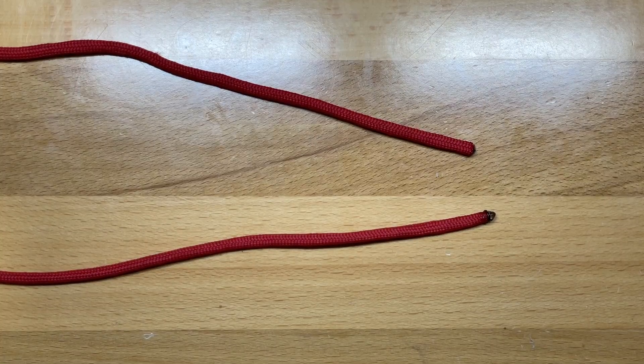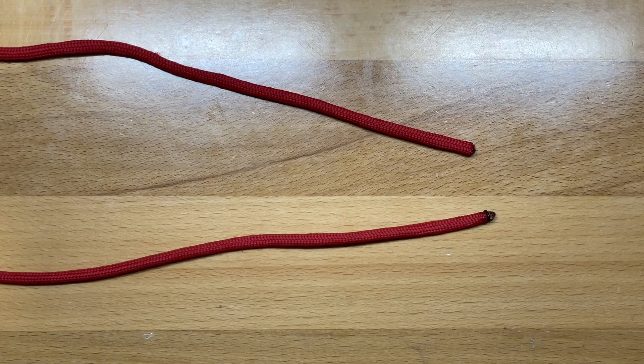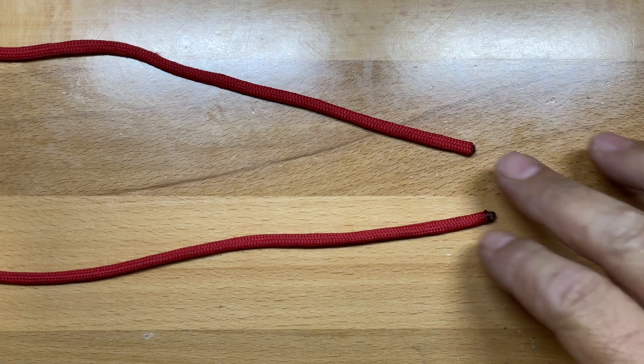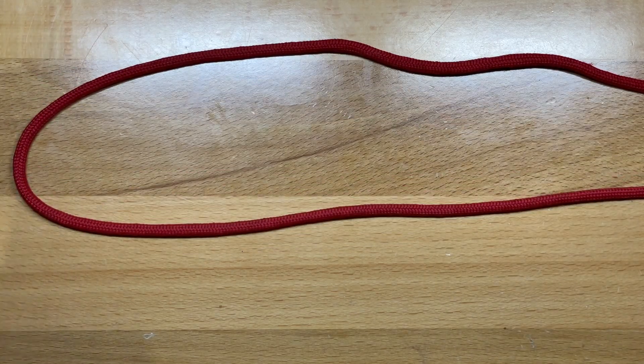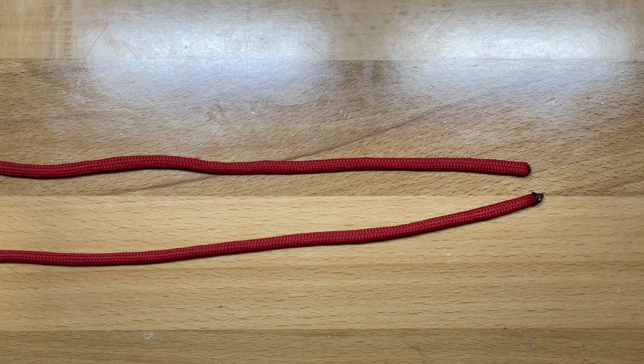Today I'm going to show you a really useful knot. It has a lot of different uses. It's called the Canadian Jam Knot, and for demonstration purposes I've got a little piece of paracord just about two feet long.